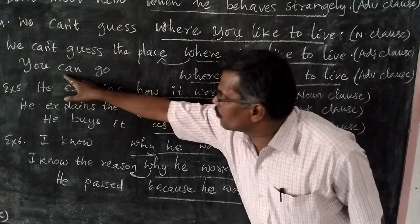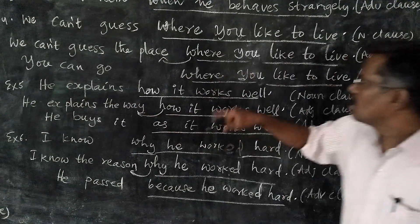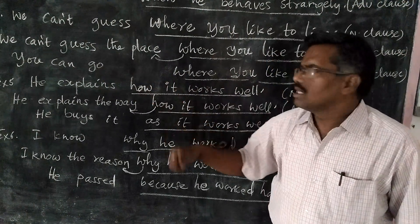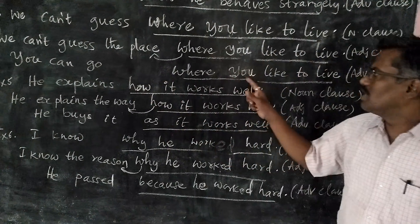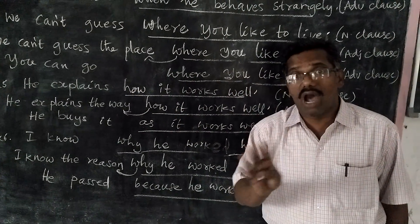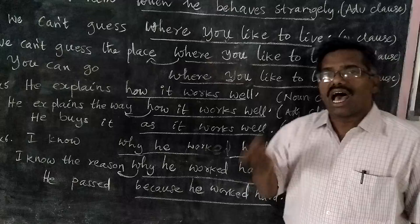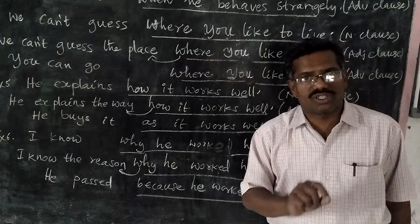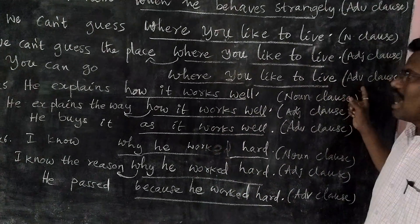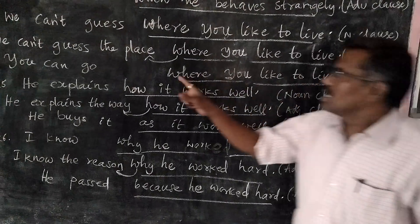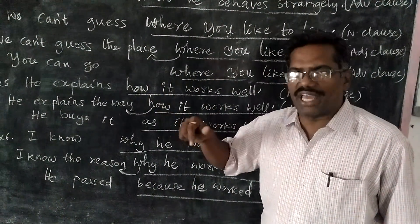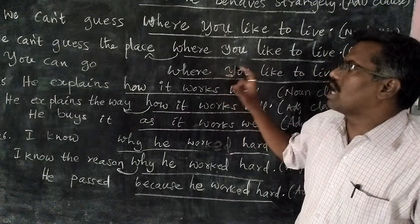Third: 'You can go where you'd like to live.' You can go — where? So this clause answers the question 'where,' not 'what.' If a clause answers a WH word other than 'what,' then it is called adverb clause. Here it answers 'where,' so it is an adverb clause.